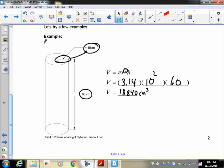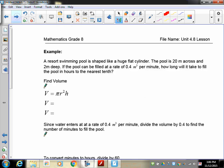A resort swimming pool is shaped like a flat cylinder. It's a circle and it's deep. The pool is 20 meters across and it's 2 meters deep. If the pool can be filled at a rate of 0.4 cubic meters of water every minute, how long will it take to fill the pool in hours to the nearest tenth?